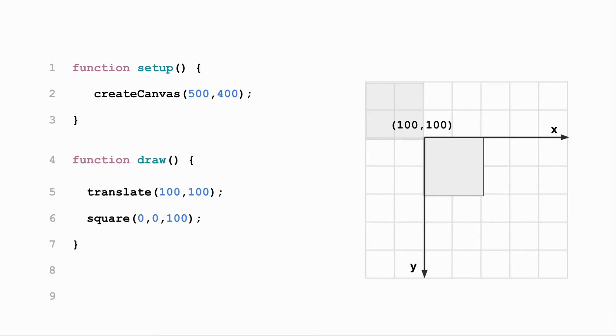Therefore, when a square is drawn with x and y-coordinates 0,0, it will be drawn 0 pixels to the right and 0 pixels down from the origin, which is now 100,100. But what happens if we translate multiple times?